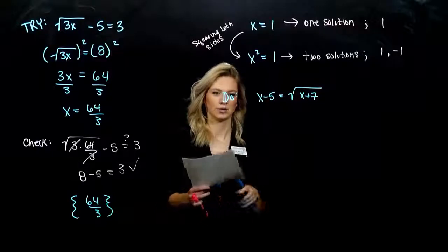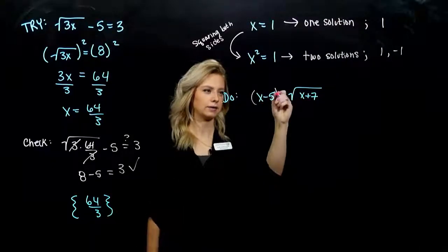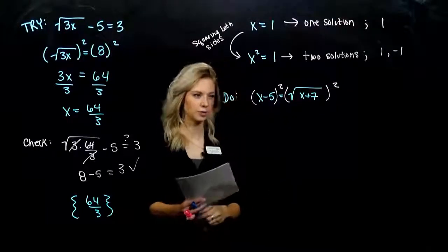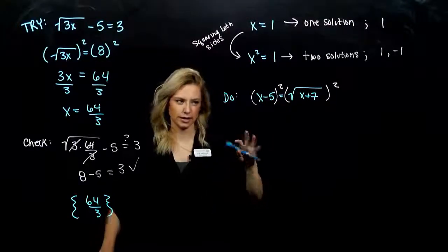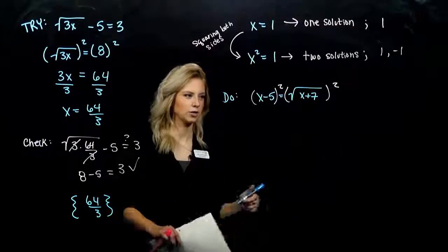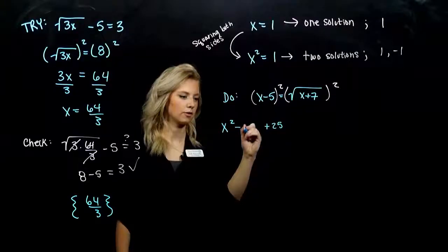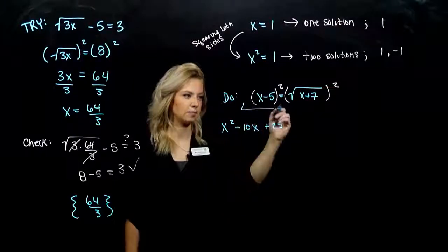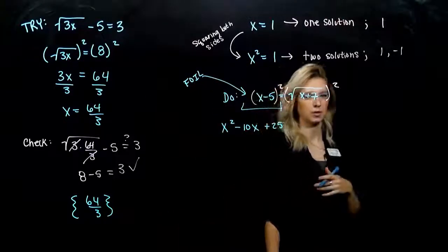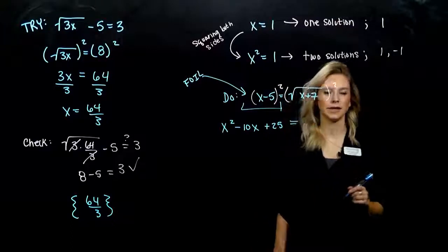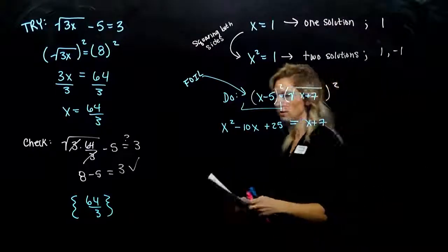Let's practice some more. First step: get the radical on its own — it already is, which is great. So we can square both sides. On the left-hand side, we can't distribute the square over the difference; this is x minus 5 times x minus 5. Using our shortcut: first thing squared is x squared, last thing squared is 25, and 2 times the first times the second gives negative 10x. This is going to be the biggest mistake you make — we have to foil it out, we can't distribute over that difference.